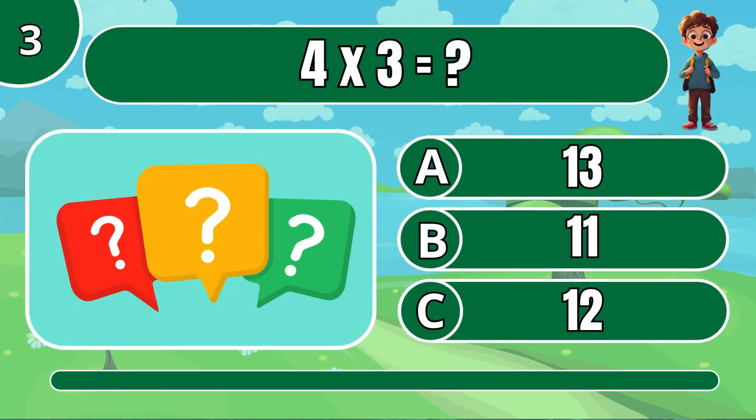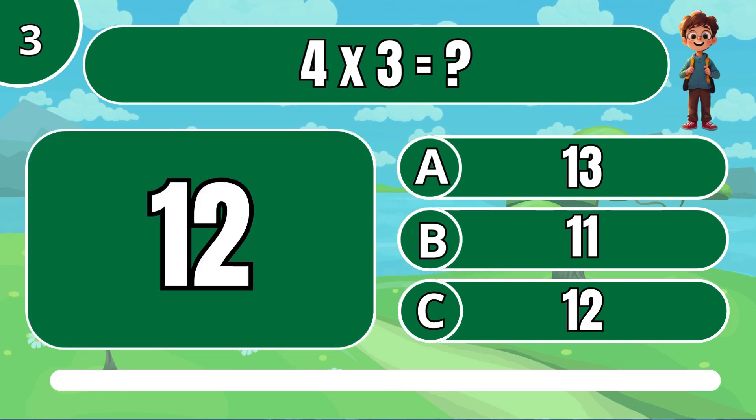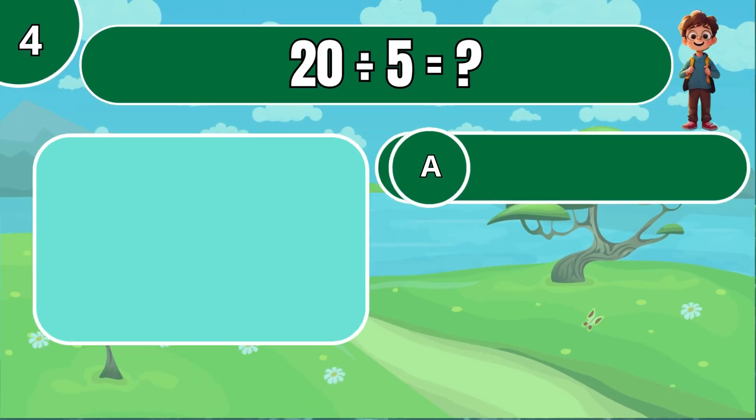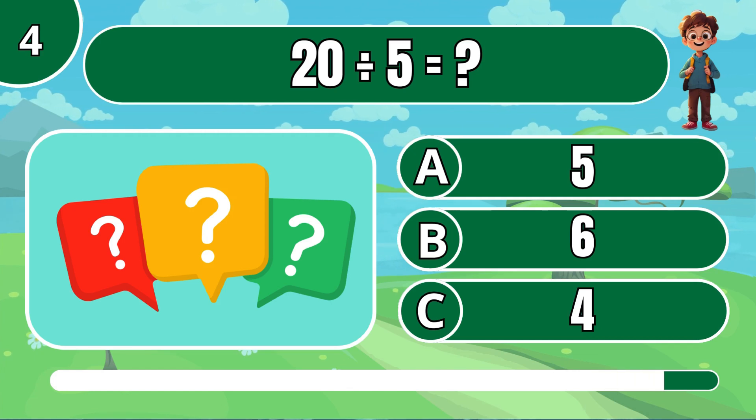What is 4 times 3? C, 12. What is 20 divided by 5? C, 4.